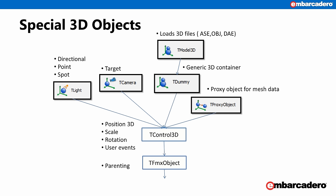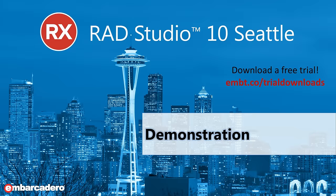There are other components used in 3D applications: light, camera, and dummy — a useful non-visual container for other objects. There is also the TModel3D component, which makes it possible to load 3D information generated by external software through standard file formats like ASE, OBJ, or DAE. Now let's go into the demonstrations.